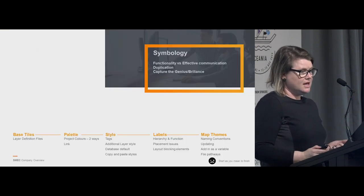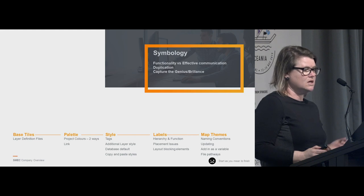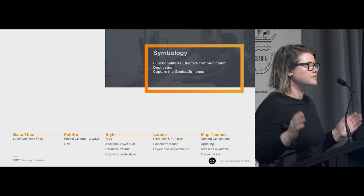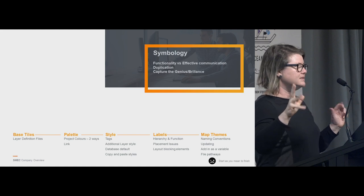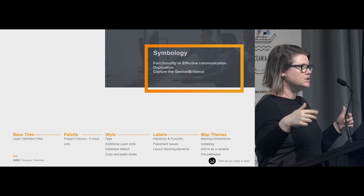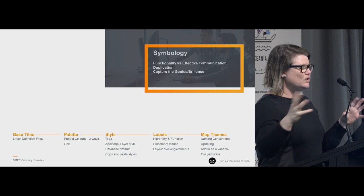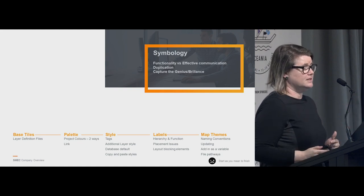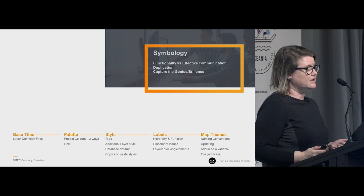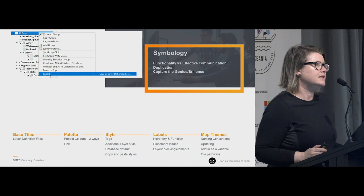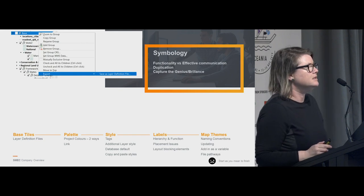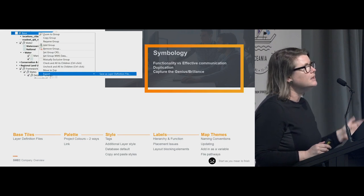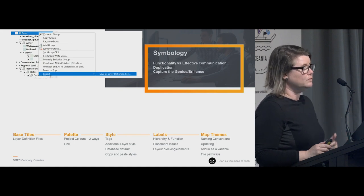Symbology — you have to think about functionality versus effective communication. You can go from your cyan, apple, and yellow machine-learning-type colours, or you can come to a massive design and lose everything. You need to find the balance. Here are some symbology hacks to save your time: use your base layers, save them out as layer definition files. This is really good when you haven't got access to internet or don't want to use WMS-based tiles.